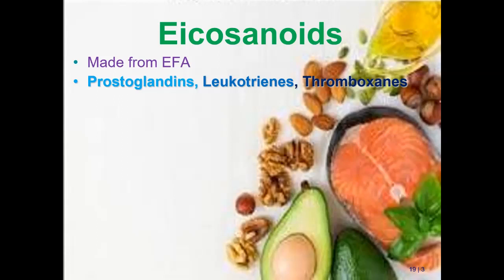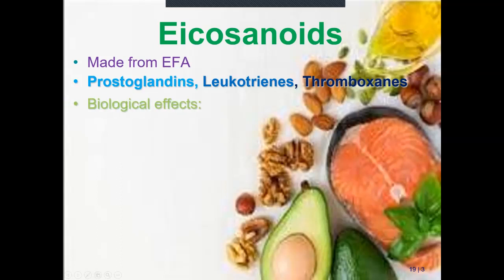You'll want to pause and write down the three types of eicosanoids: prostaglandins, leukotrienes, and thromboxanes. Prostaglandins were originally isolated from the prostate gland; there are now hundreds and they're found all over the body. Leuko means white blood cells, so leukotrienes are found in white blood cells. Thromb relates to blood clotting, so thromboxanes are part of the blood clotting pathway.